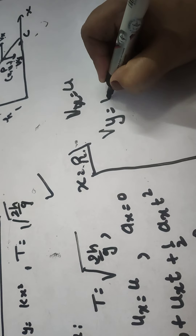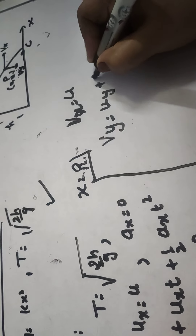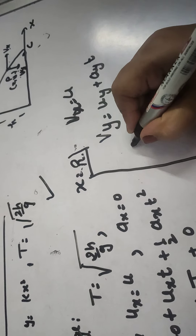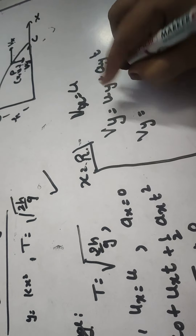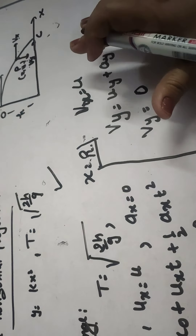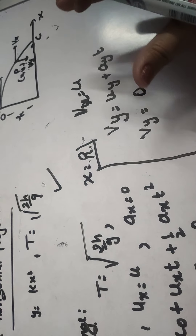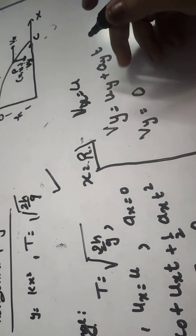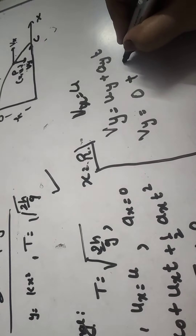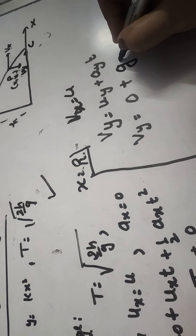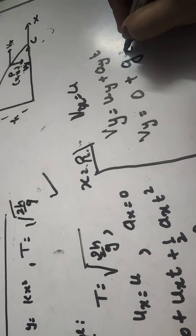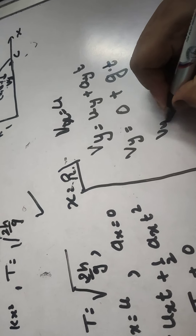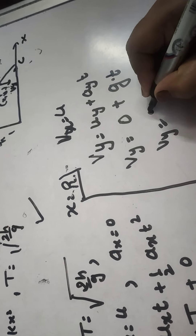To find vertical velocity, we use VY = UY + AY·T. UY is 0 because there is no vertical component of horizontal velocity. AY is G, and T is any time at which we are finding the velocity. So VY = G·T.